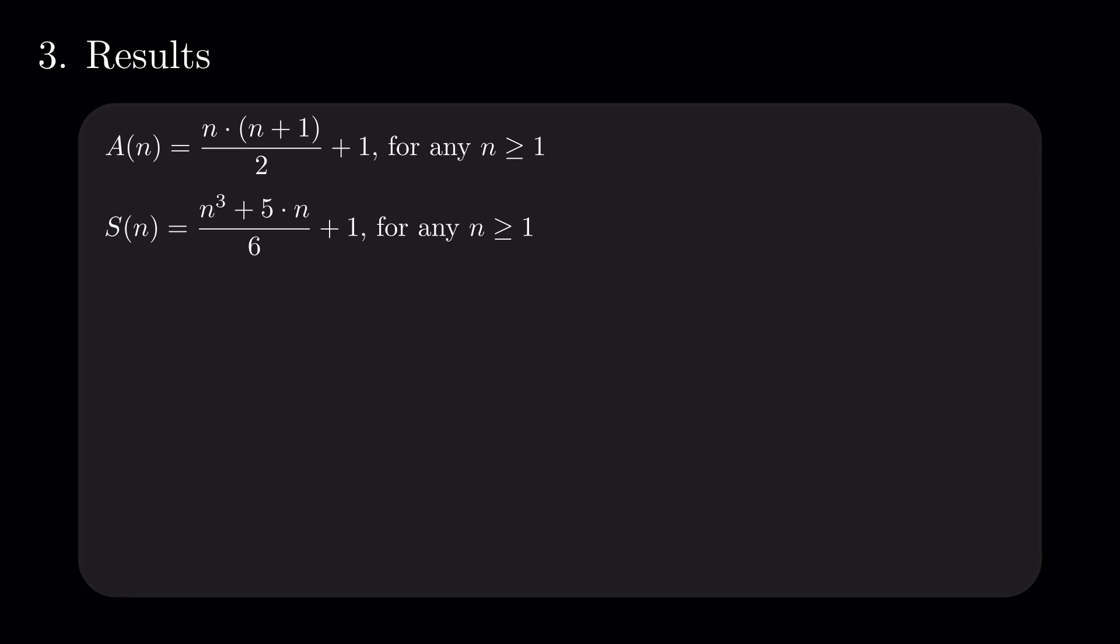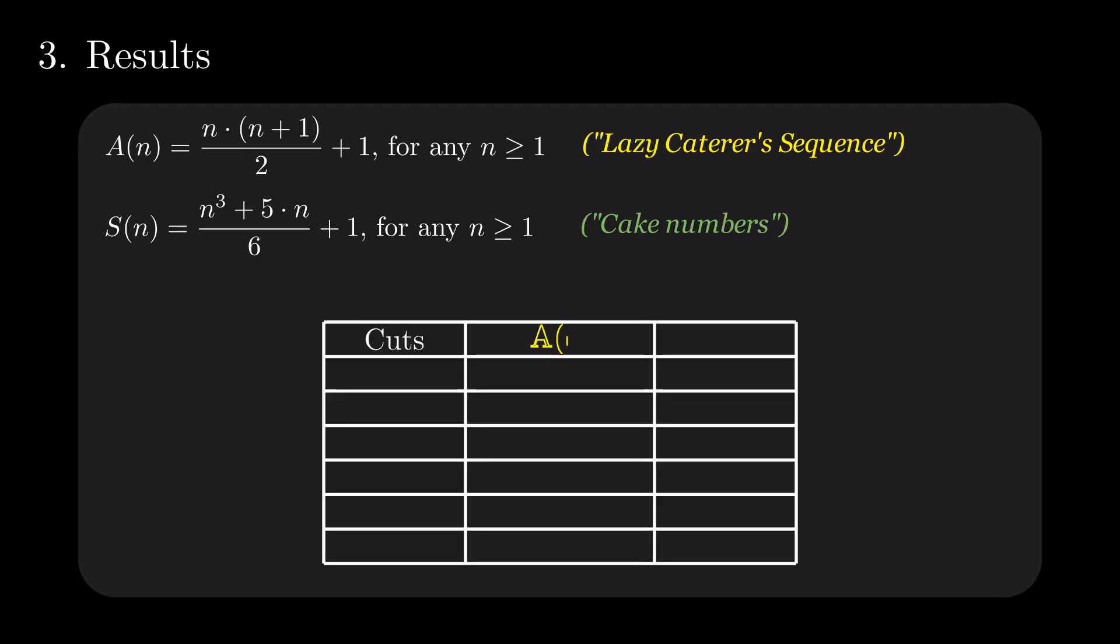In conclusion, we obtained two sequences. One that describes the maximum number of slices one lazy caterer can cut a pizza into with just k cuts. And one for the number of chunks you can cut from a cake, the obvious 3D equivalent of a pizza. And, to answer the initial question, you can obtain a maximum of 26 pieces, cutting a sphere 5 times.